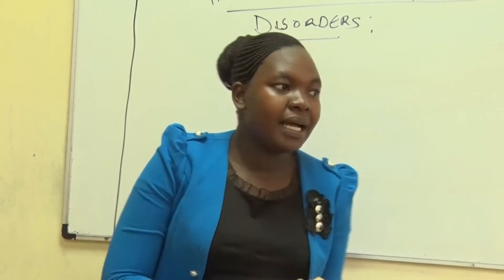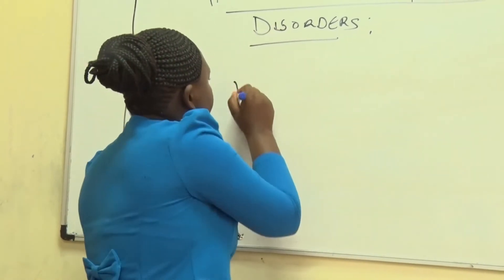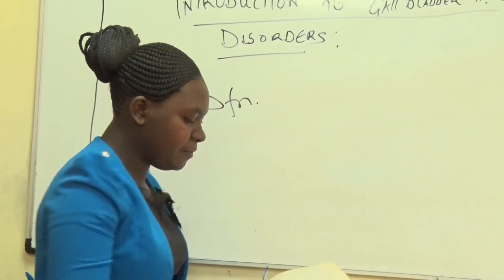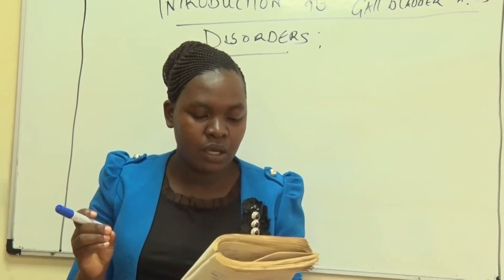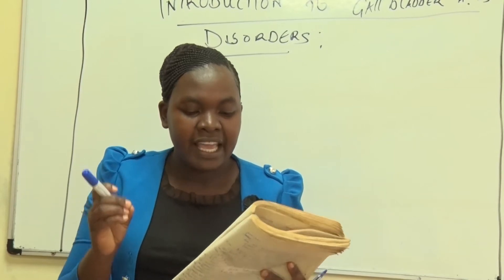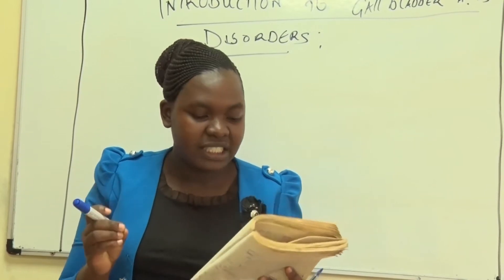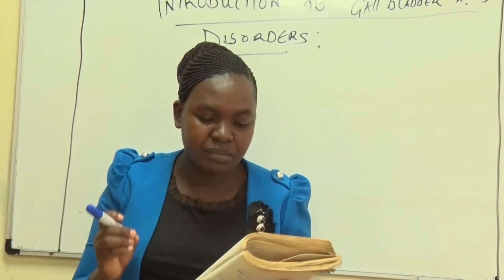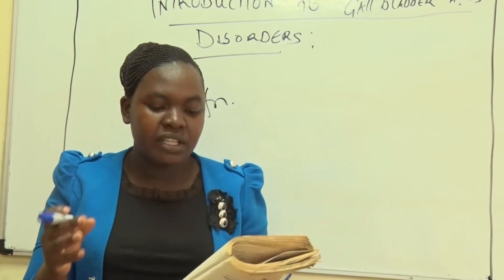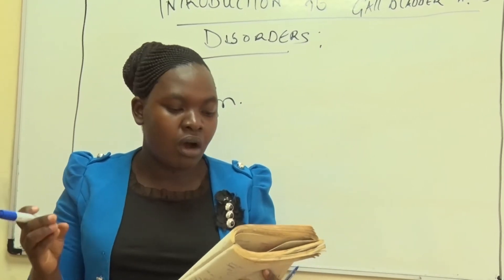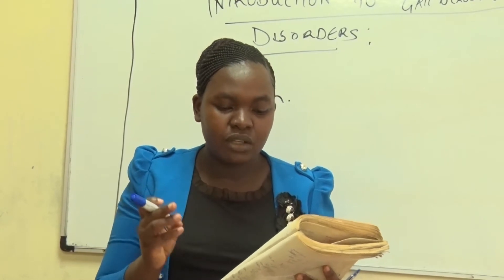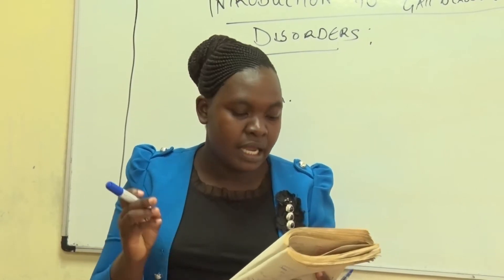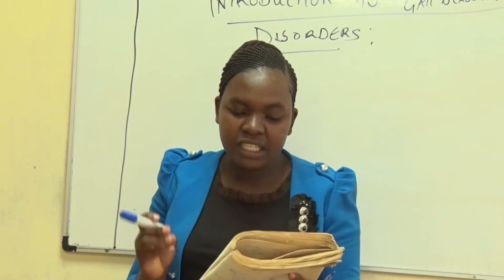Now, define the term gallbladder. It is a small organ whereby bile is stored and concentrated before it is released into the small intestine.